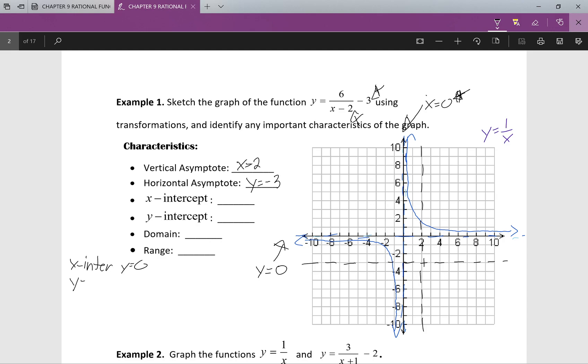Looking at my original graph, y equals 6 over x minus 2 minus 3. I set y equals to 0, and I get 6 over x minus 2 minus 3. The next thing that I'm going to do is I'm going to add the 3 to both sides, giving me 3 equals 6 over x minus 2. I multiply both sides by that x minus 2, which will give me 3 bracket x minus 2 equals 6.